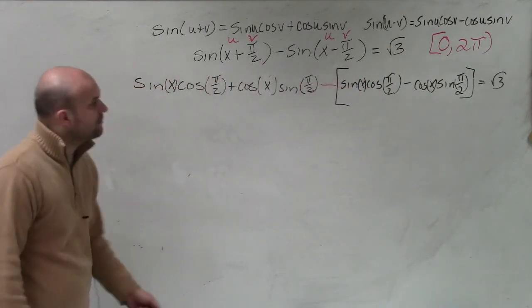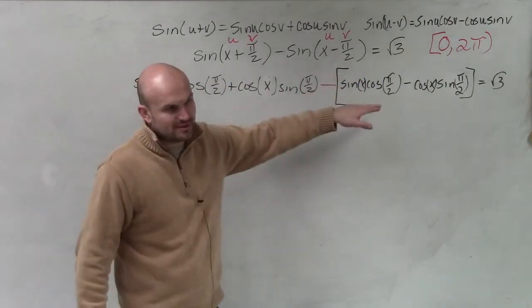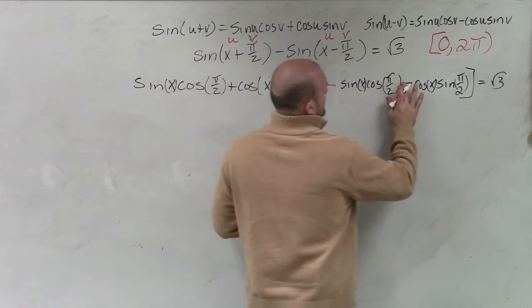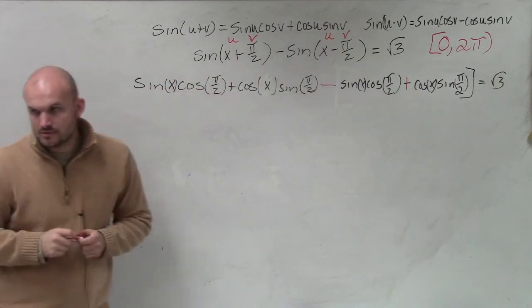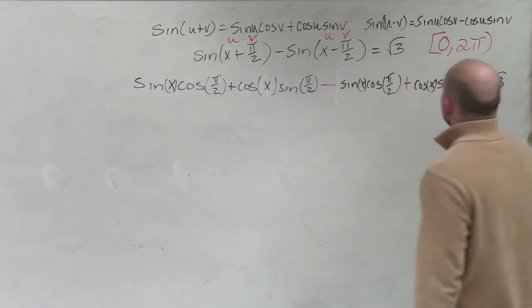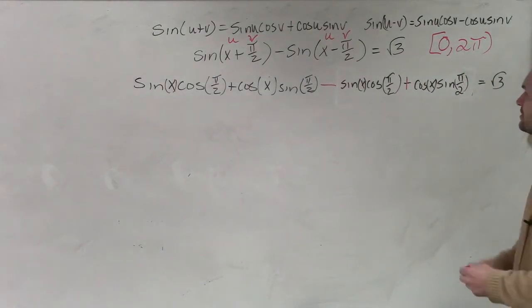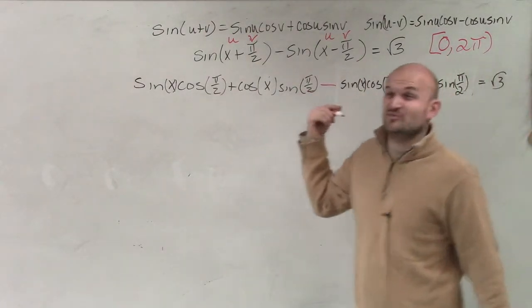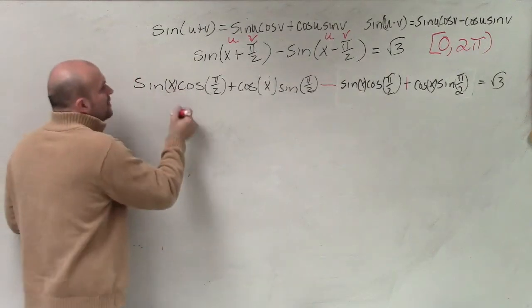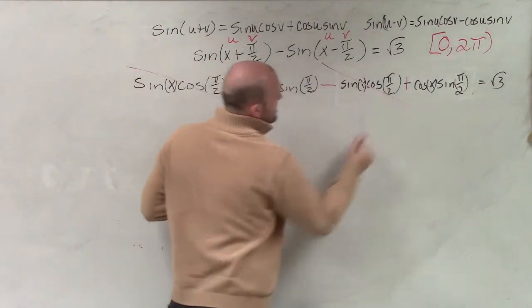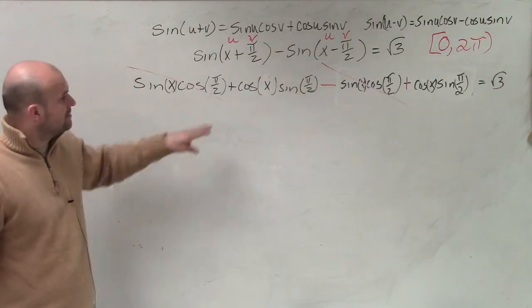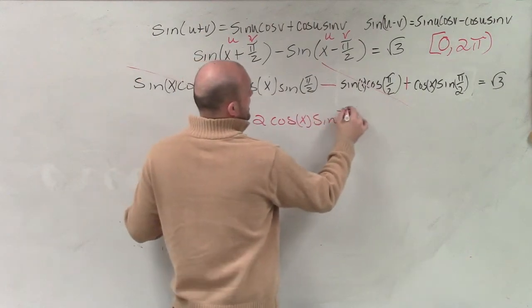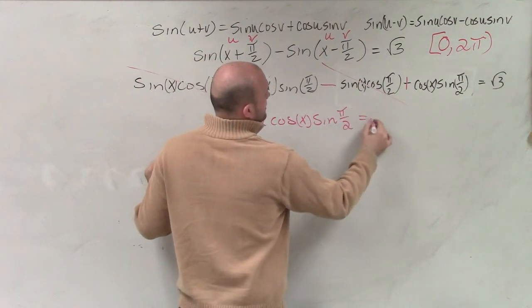So now, one thing I can do is distribute this. So distribute this—that makes that negative, and now that's going to make that positive. Does everybody understand what I did? I just distributed that. But now, what's kind of cool about this is I notice these two expressions are exactly the same. Sometimes you guys might have already simplified these, but you can also see before I even simplify, before I even do any work, that is exactly the same as that. One's positive, one's negative. So therefore, what I have is 2 cosine of x times sine of π halves equals the square root of 3.